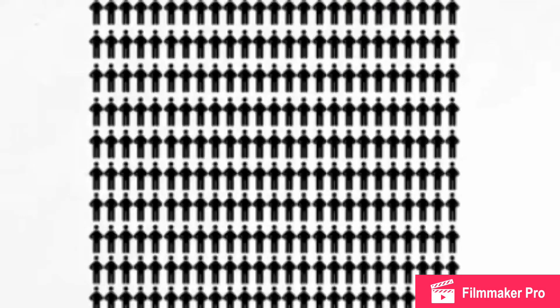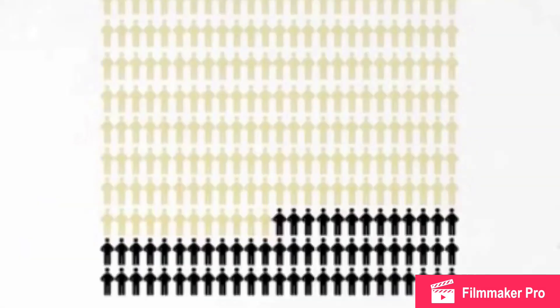DNA evidence has been used to overturn 329 convictions since 1989, and 75% of those wrongful convictions were decided largely on the basis of eyewitness testimony.